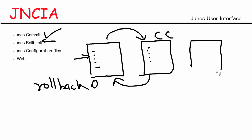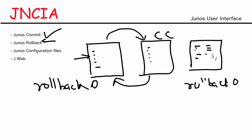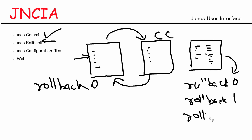When you have a blank device — let's say we've just purchased a new device with no config — when I make my first configuration change and commit it, that gets stored as rollback zero. Now if I make some more changes and commit, that one gets saved as rollback zero, and the previous rollback zero becomes rollback one. If I make more changes and commit again, rollback one becomes rollback two, rollback zero becomes rollback one, and the new changes become rollback zero.